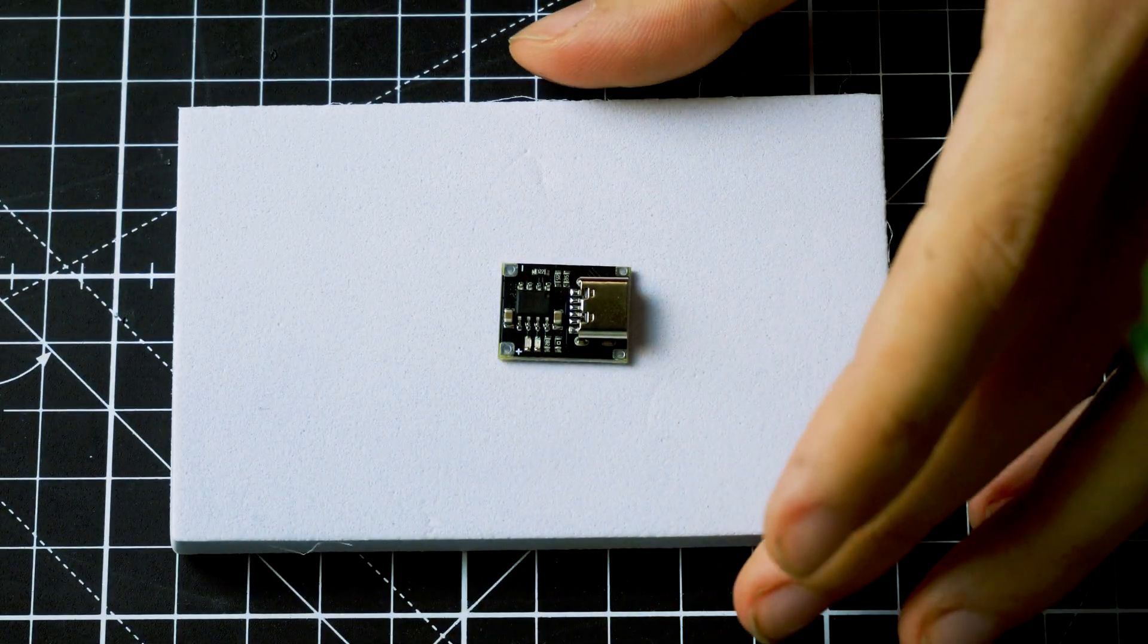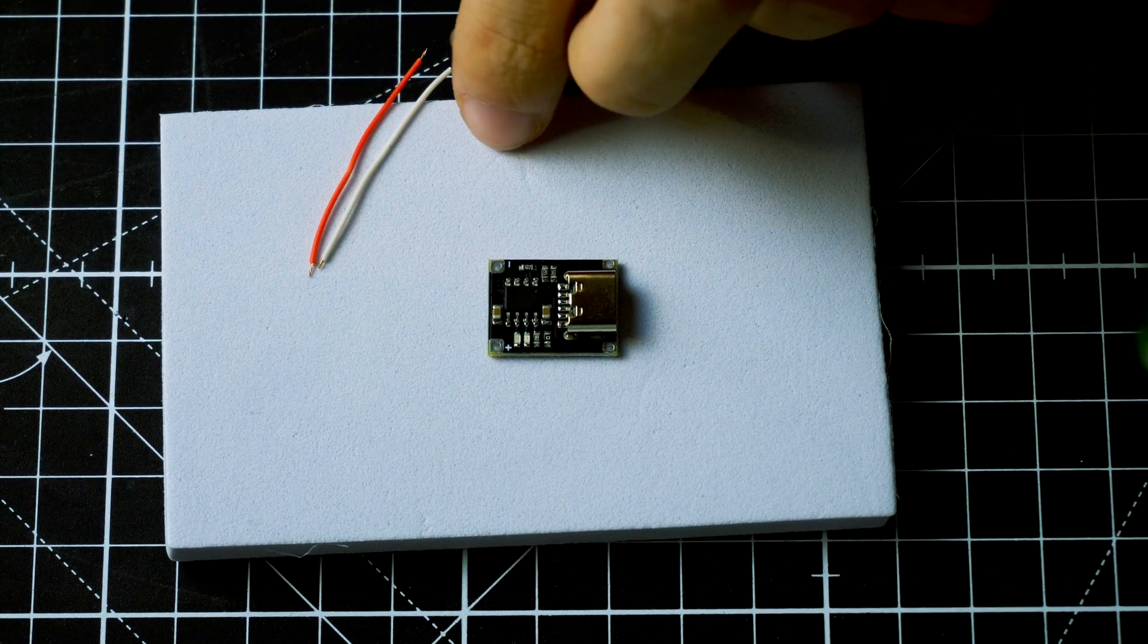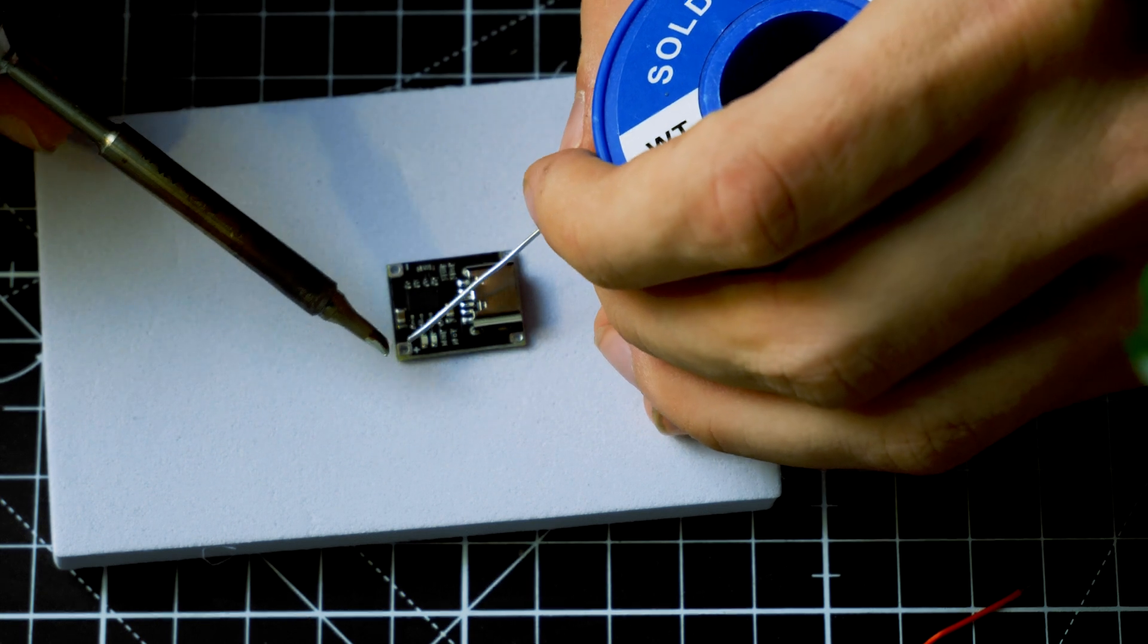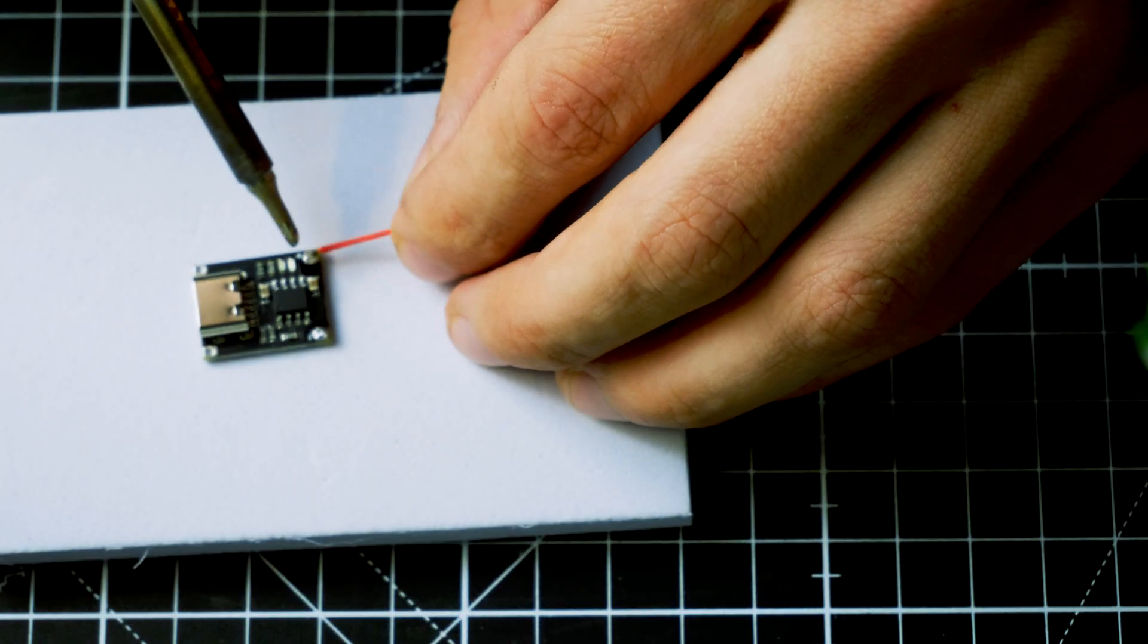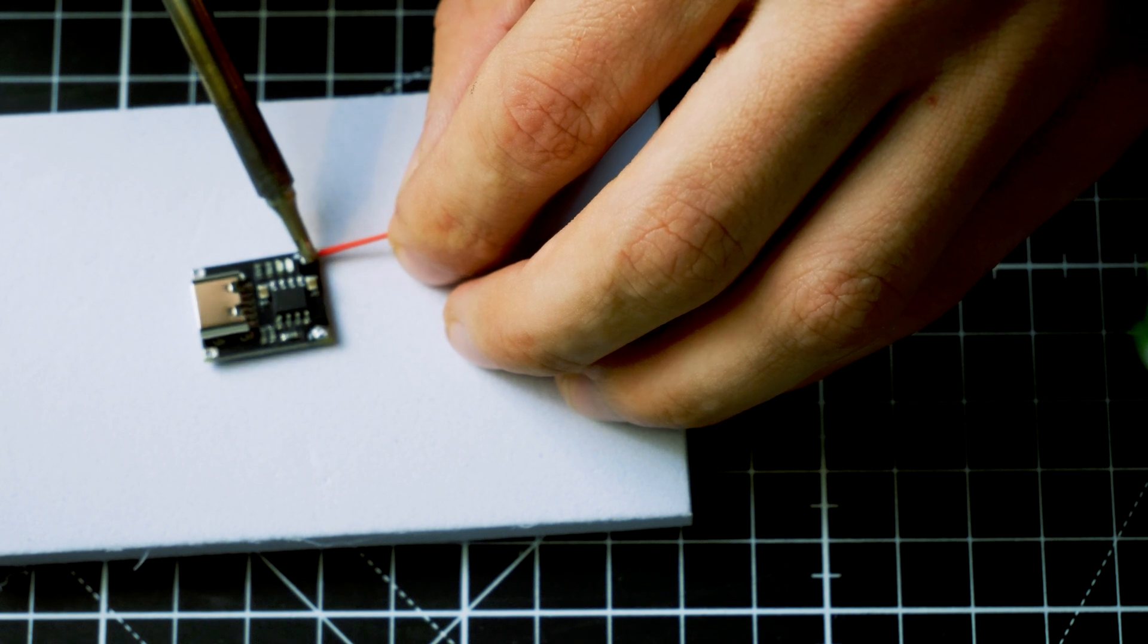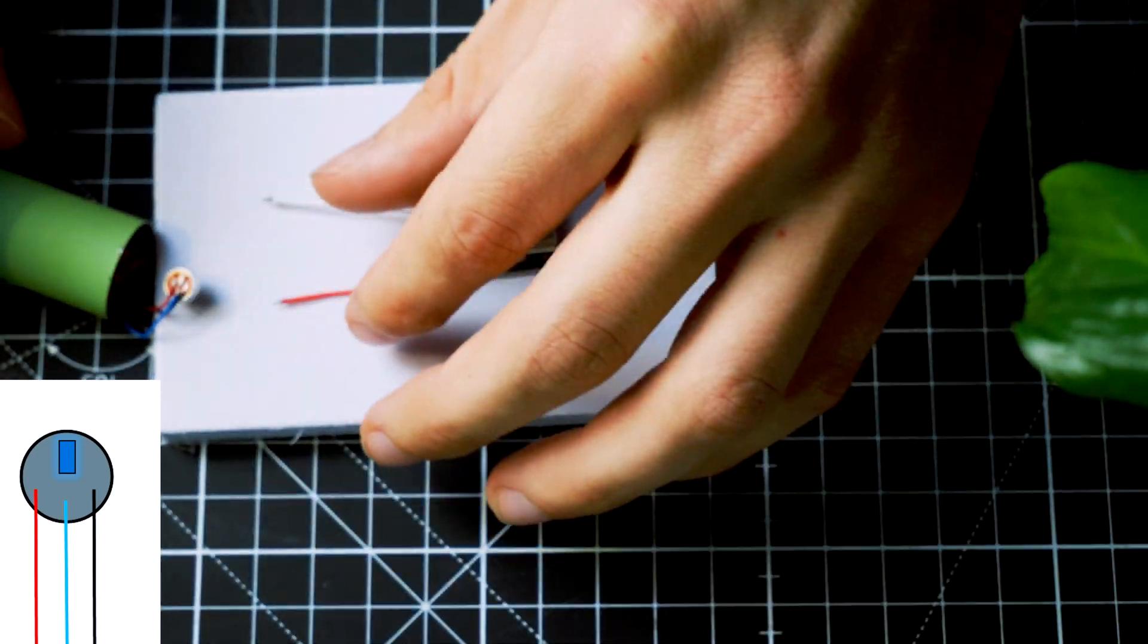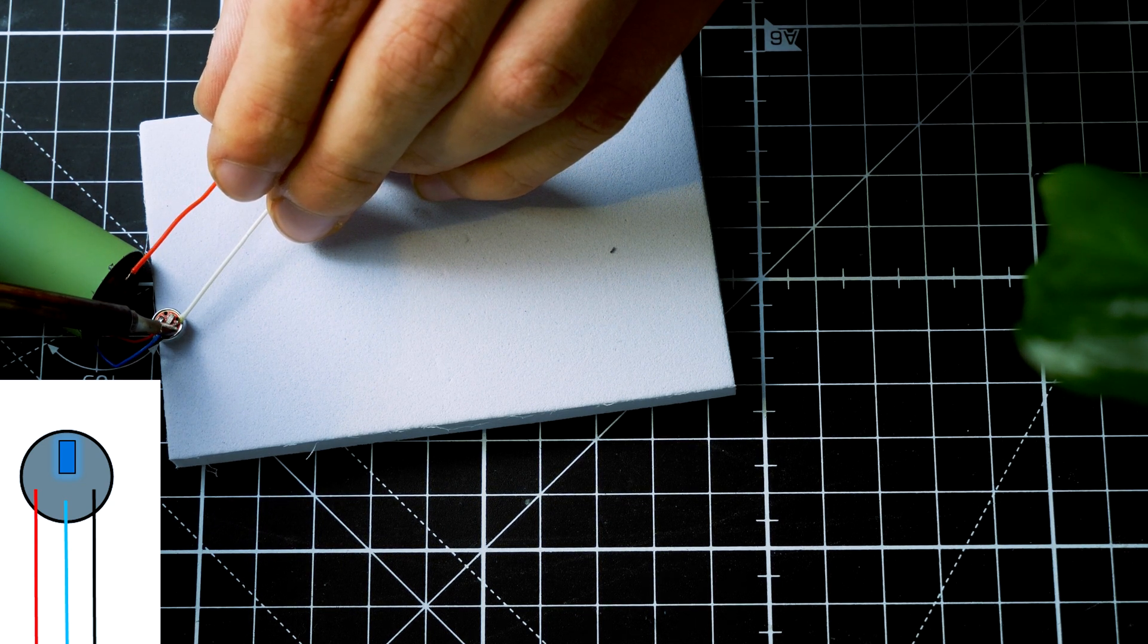Now you have to attach the prepared cables to the charger. Take your soldering iron and carefully solder them in place. Next you have to attach them, the red for the positive side and the black for the negative side, onto the sensor.